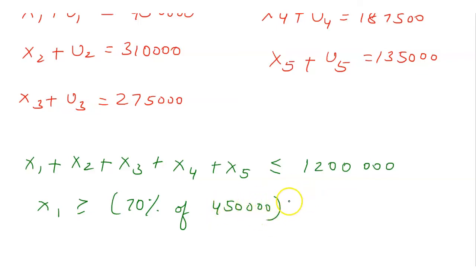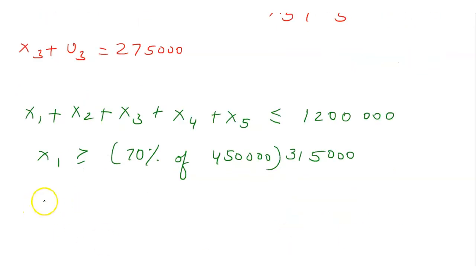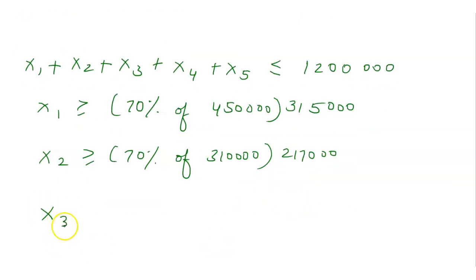x2 is greater than or equal to 70% of 310,000, which is 217,000, and x3 is greater than or equal to